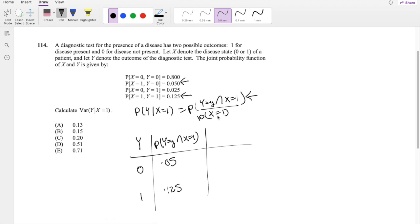And now we just have to divide by the probability that X equals 1. So what is the probability that X equals 1? Well, X equals 1 at these two spots right here, so I just have to add those two up. 0.05 plus 0.125, which equals 0.175.